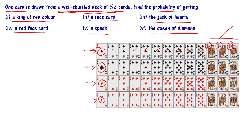Now, in the deck we have 13 clubs, 13 spades, 13 hearts, 13 diamonds. Clubs are black color, spades are black color, hearts are red, diamonds are red.